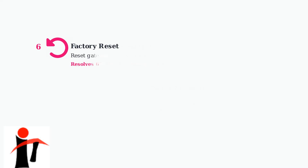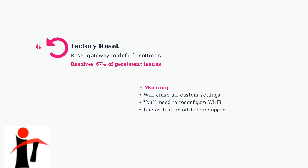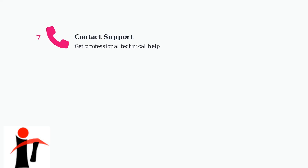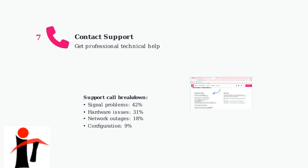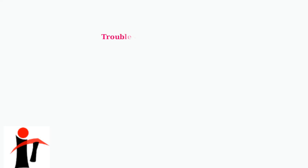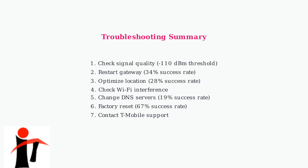Sixth, if problems persist, perform a factory reset of your gateway. This will restore all settings to defaults and resolves about 67% of persistent configuration problems. Finally, if issues continue after trying these steps, contact T-Mobile support for professional assistance. Signal-related problems account for 42% of support calls, gateway hardware issues for 31%, and network outages for 18%. Following these systematic troubleshooting steps will resolve most T-Mobile home internet connectivity issues.